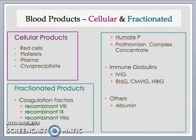Here is a general list of the cellular products and fractionated products that you may find in your local blood bank or hospital transfusion medicine service. Please be aware that there may be some regional variability depending on local clinical needs and inventory, so you should always refer to your local transfusion medicine service for the full inventory list and their availability.